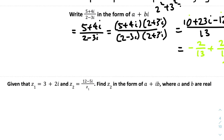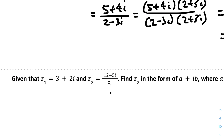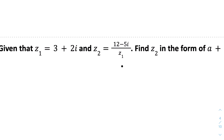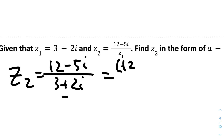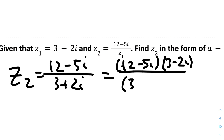For Question 2: given that z₁ = 3 + 2i and z₂ = (12 - 5i) / z₁, find z₂. It's basically the same method but we substitute the values. So z₂ = (12 - 5i) / (3 + 2i), and we multiply top and bottom by the conjugate 3 - 2i.